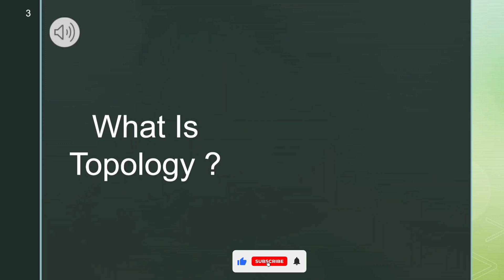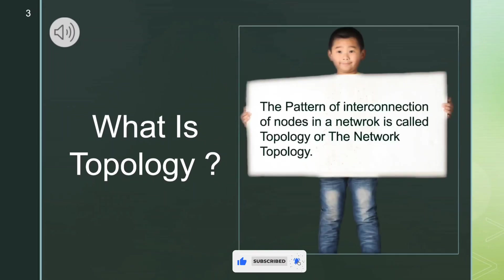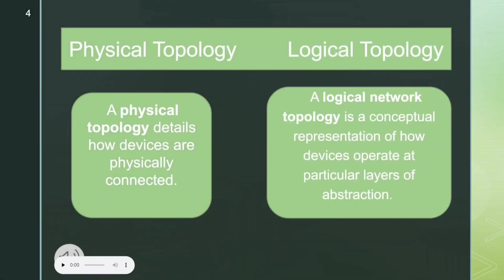So what is topology? The pattern of interconnection of nodes in a network is called topology, or network topology. Physical topology details how devices are physically connected. Logical topology is a conceptual representation of how devices operate at particular layers of abstraction.